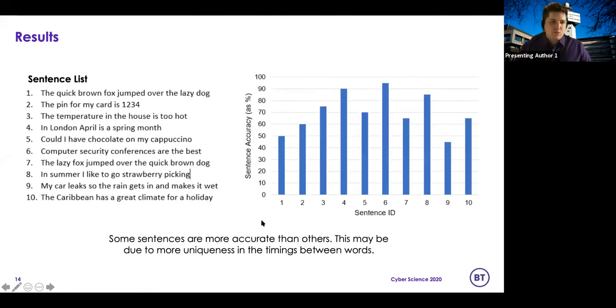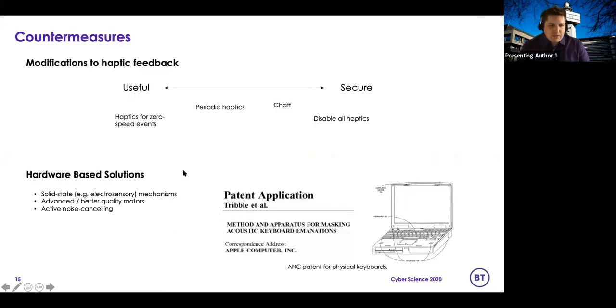In terms of the sentences we used, we tried to vary them. We wanted some with long words, some short words, but all a fairly similar length for this study. And you can see that the ones with more complex, longer words tend to be the ones that get classified the best. So 'computer security conferences are the best,' for example, achieved the best accuracy score. And we can see that there are a few periods where the finger is not being raised and new haptics aren't being triggered.